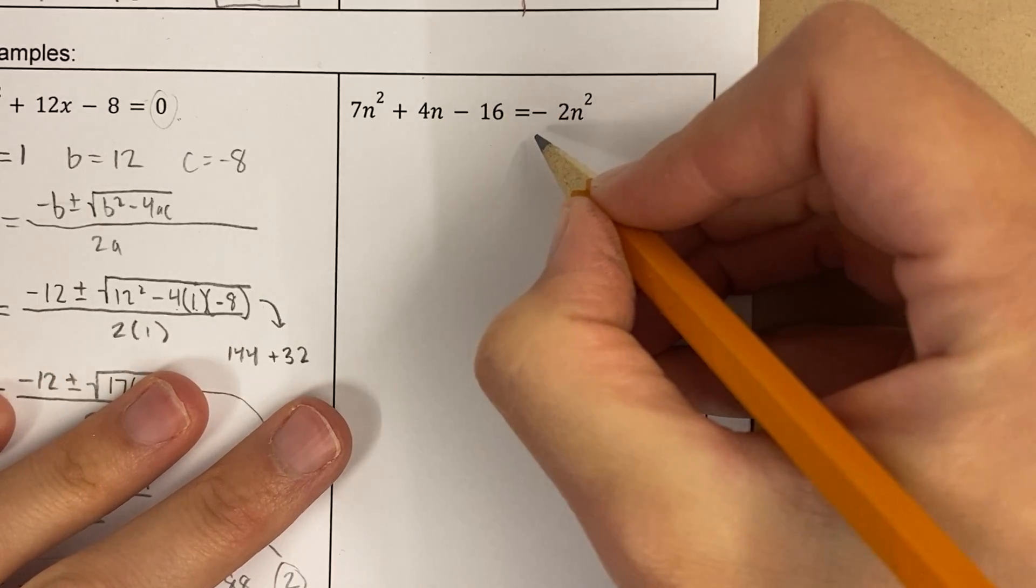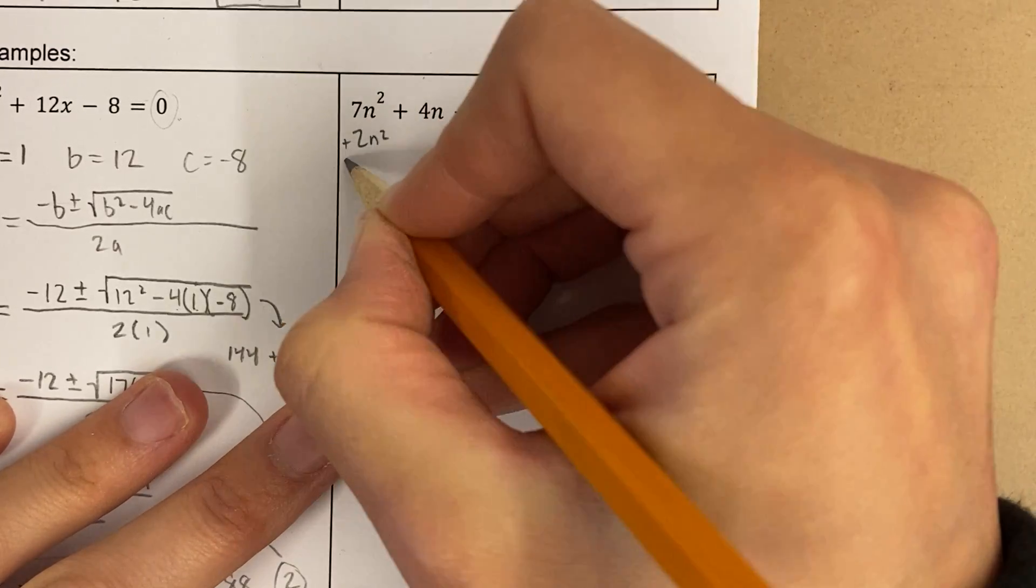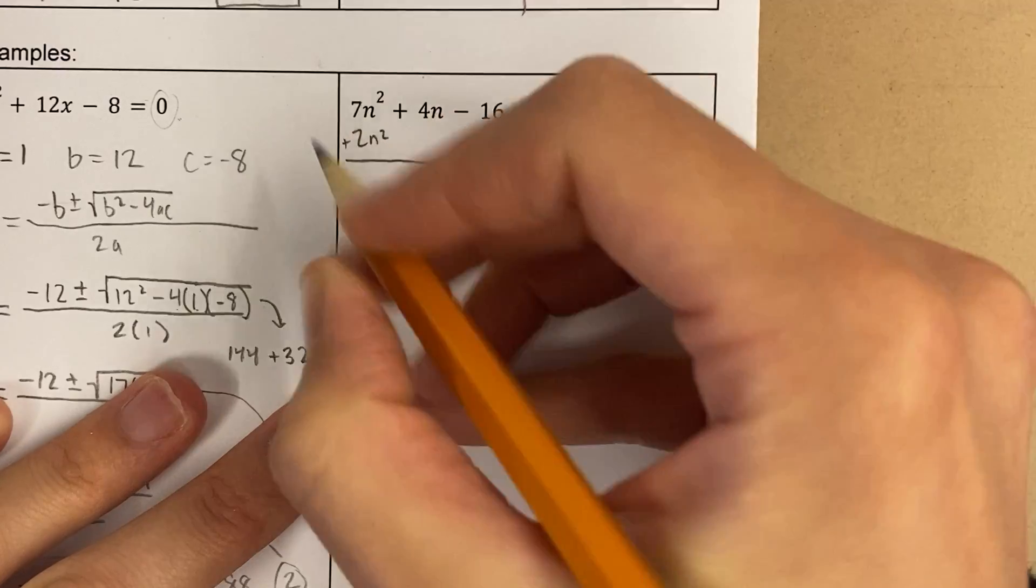Okay, let's take a look at this next one. This one comes out just a little bit different. Okay, I'm going to add 2n squared to both sides first because it's not in standard form, right? That has to be a 0.